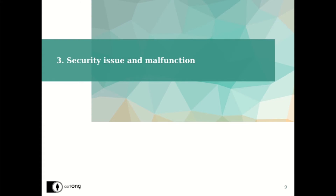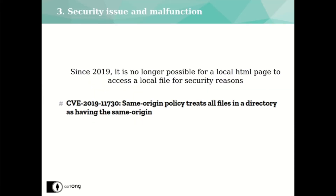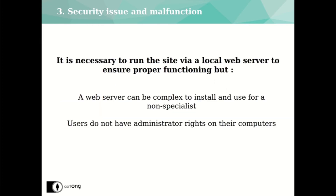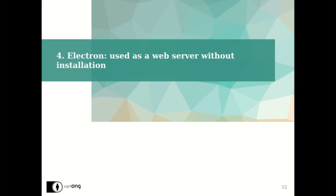But while this solution worked well for several years, it is currently no longer possible. Google Chrome and Mozilla Firefox have restricted the opening of a local file by an HTML page for security reasons. The aim is to prevent a person from downloading an HTML file that fraudulently retrieves data from their computer. The consequence in our case was that the application could no longer read CSV and GeoJSON files when used locally. It therefore became necessary to use a web server to run the website locally, but we were faced with two problems: the installation and use of a web server for a non-specialist is not necessarily simple, and the users of the site did not have sufficient rights to install new programs on their computers.